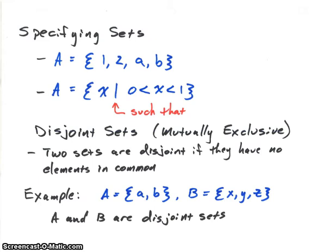To specify sets, we have two basic methods that we'll use. The first one is we'll just list out the elements of the set. In this case, we've got a finite set, and we can list them 1, 2, A, and B. And so we just list them out.